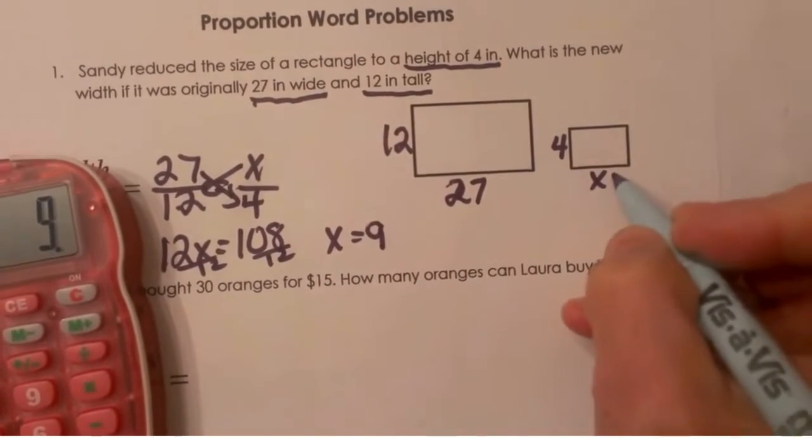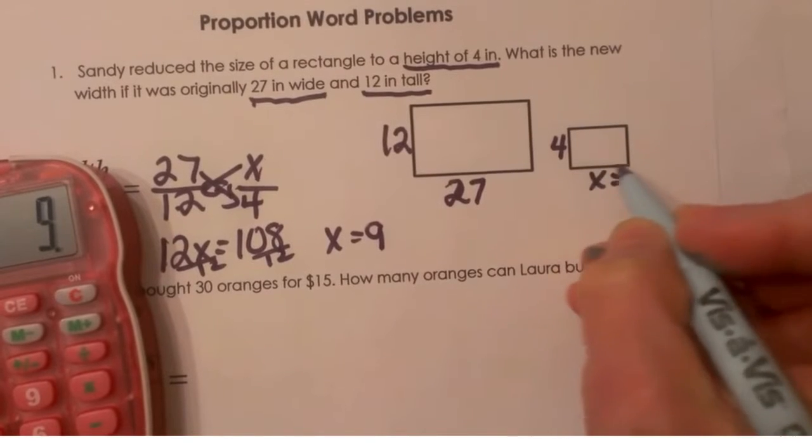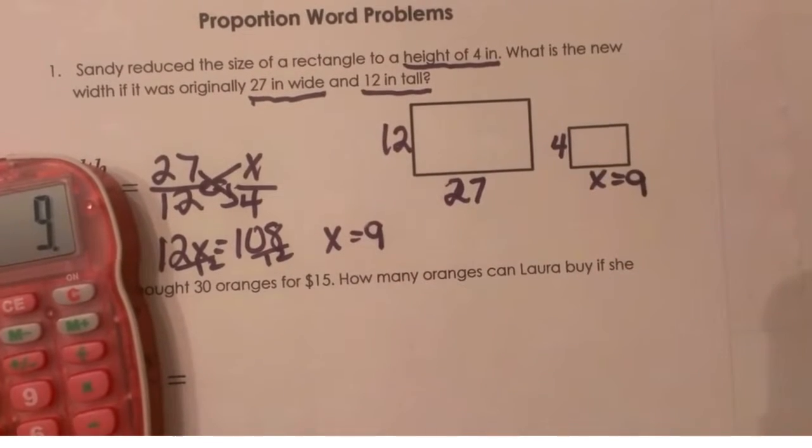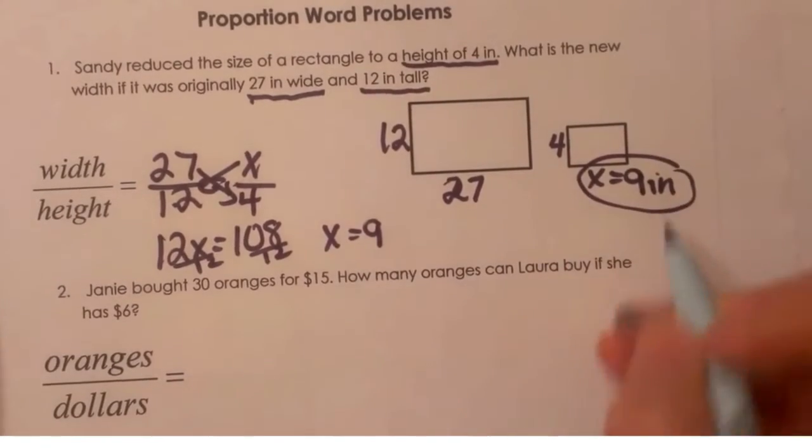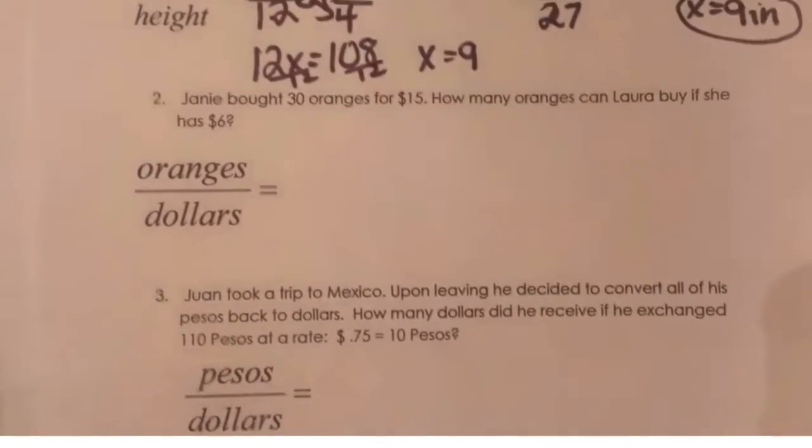And so X is going to be 108 divided by 12 and that is 9. So that means the new width is 9, and that would be in inches because that is a word problem we need to put a unit measure with it. Let's look at a second one.